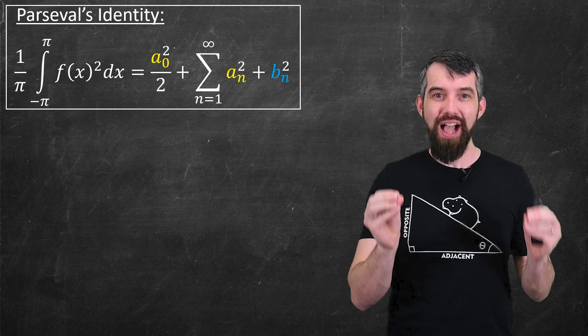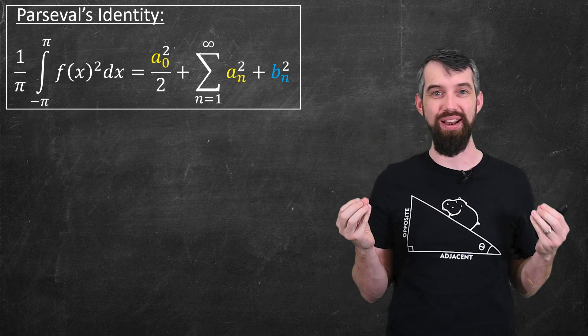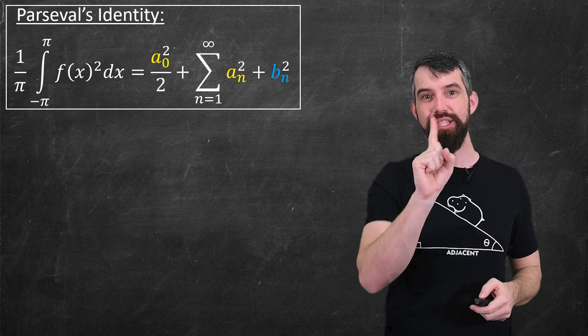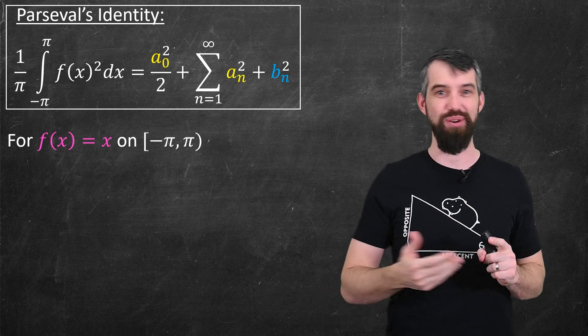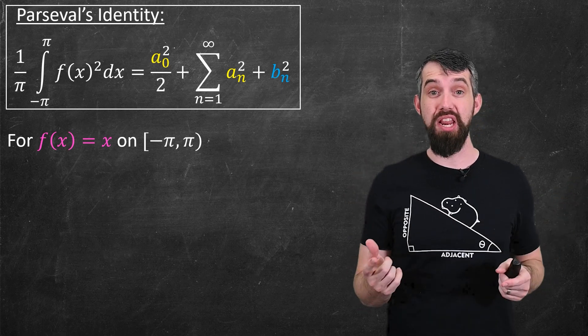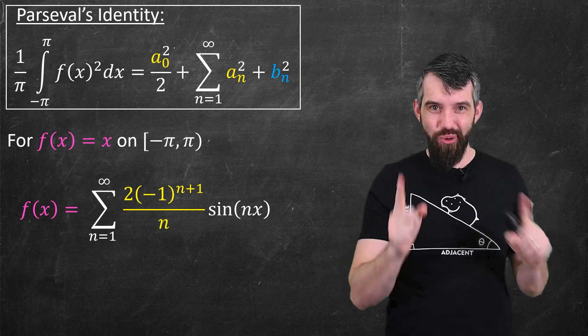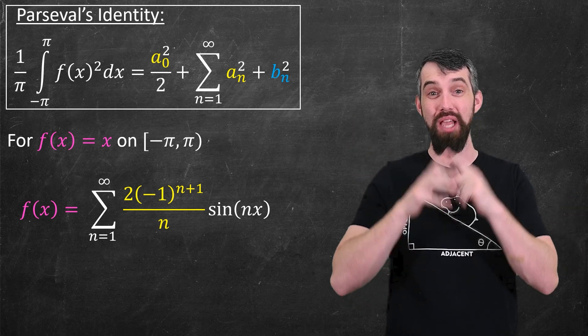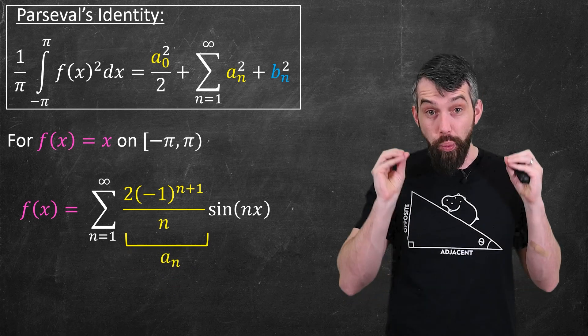So we are finally ready to actually prove our claim now that we've justified Parseval's identity, at least loosely justified it. What I'm going to do is I'm going to make use of this identity for the specific function f(x) = x, and I'm going to take that on a particular interval, the interval -π to π. So I have a left-hand side and a right-hand side of Parseval's identity, and I want to plug this specific f into both of them. And the first thing I'm going to note is I know what the Fourier series for f(x) = x is.